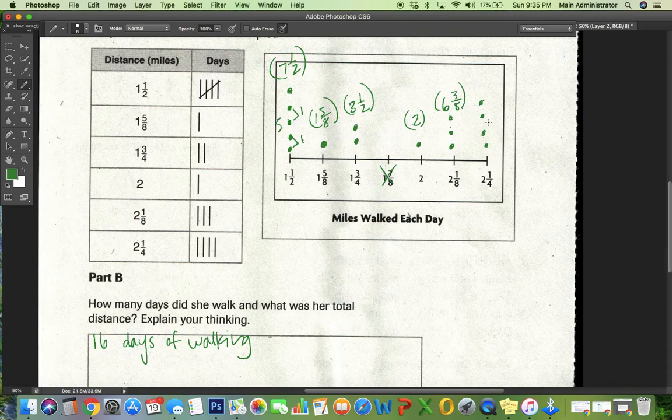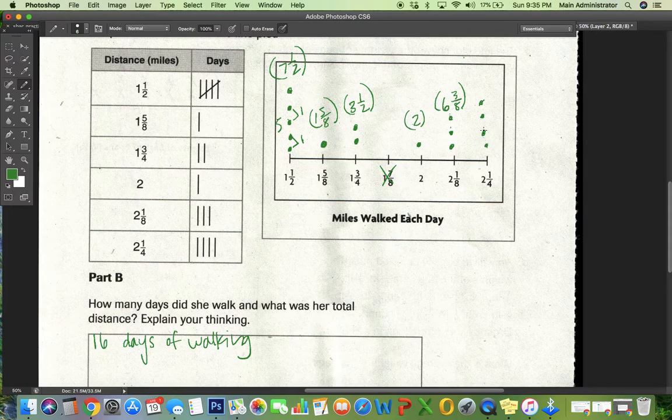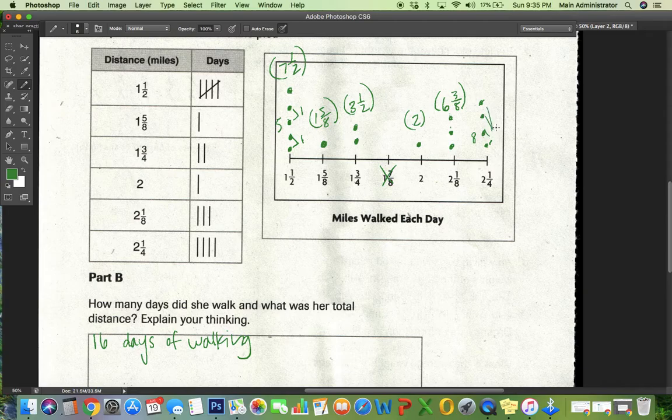And this one, two and one-fourth. Well, two, four, six, eight plus one, two, three, four equals a whole. Or those are fourths. So it's a total of nine.